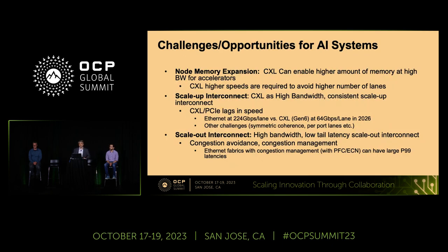Some of the challenges and opportunities: from a node memory expansion perspective, today we're limited to what we can add with DRAM or HBM to an accelerator. If you want to add more, you start getting beachfront-limited by the number of pins. This is where CXL plays a role, driving with high-speed serial links. However, CXL is currently lacking in bandwidth compared to other solutions — if you run at Gen 5 or Gen 6 PCIe speeds, you need a much higher number of lanes compared to running at higher bandwidth, which is a challenge from an integration perspective.